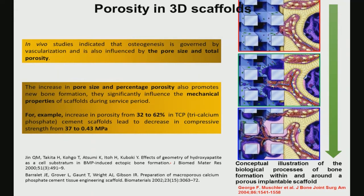Porosity is important in 3D scaffolds. With the rectangular strut structure there are pore spaces in between. When cultured in a 3D bioreactor with angiogenic factors, blood vessels form and penetrate well into the porous architecture, facilitating vascularization and angiogenesis together in 3D scaffolds.